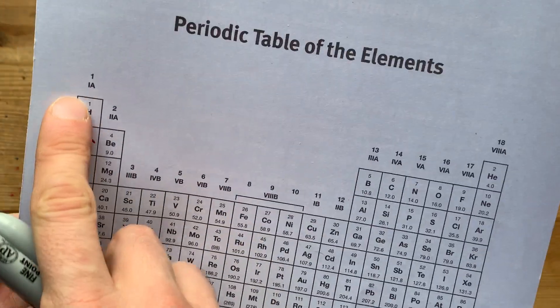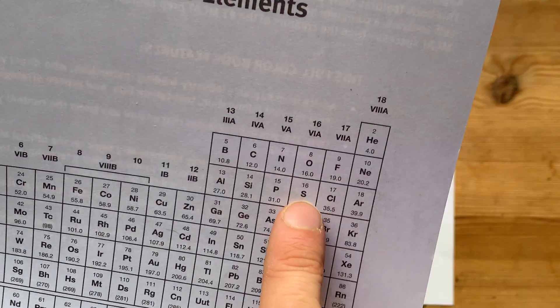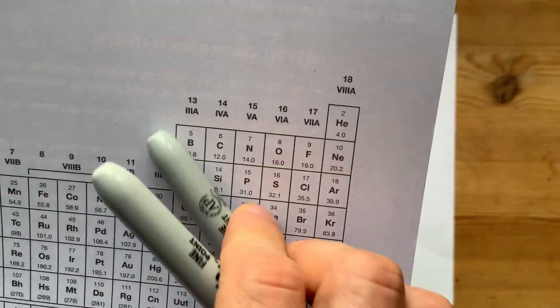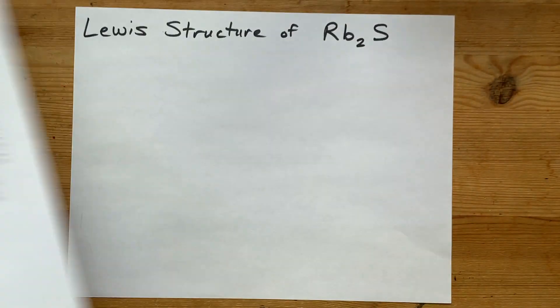Rubidium is an alkali metal. Sulfur is a non-metal. It comes from the top right corner of where the staircase is on a periodic table.